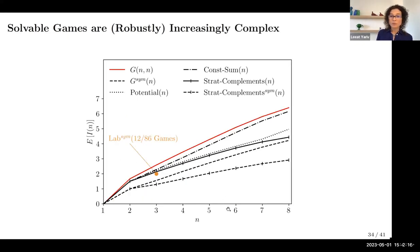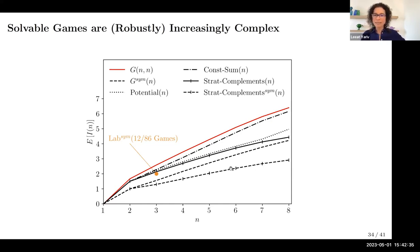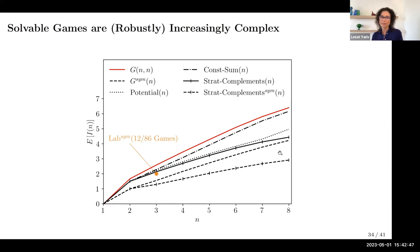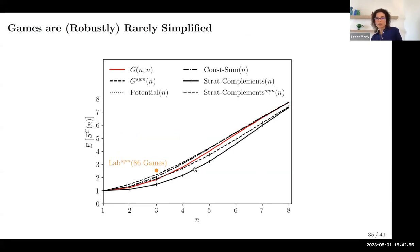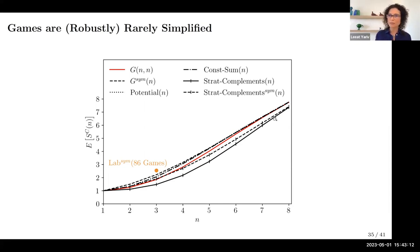In terms of the number of iterations, the random games offer sort of an upper bound, but not by a large margin — even games that are symmetric with strategic complementarities, the quote-unquote simplest among these classes, already require more than two iterations for eight-by-eight games. In terms of surviving actions, we see a very similar picture across all classes of games; if anything the lab games are more complex with fewer actions being eliminated, and the rest look fairly similar even for eight-by-eight games.